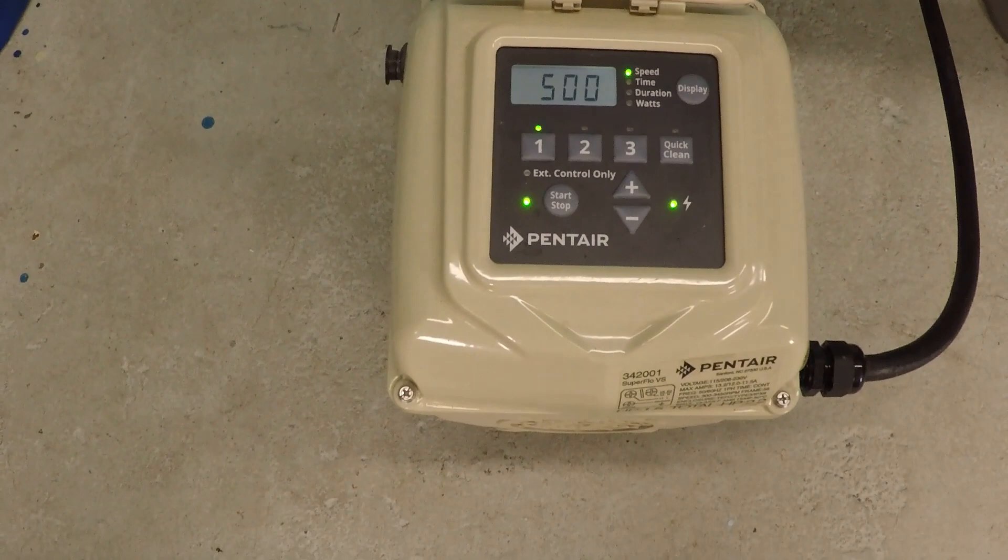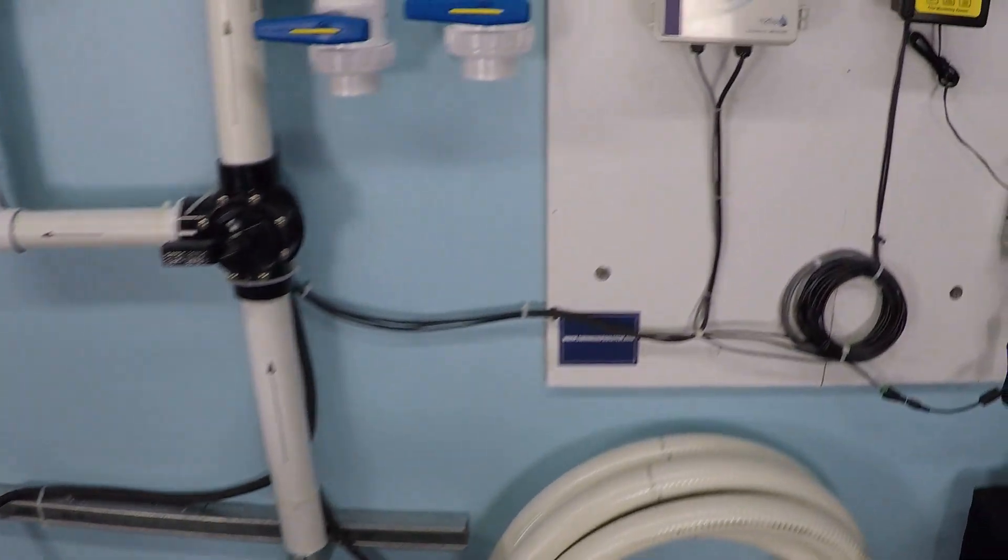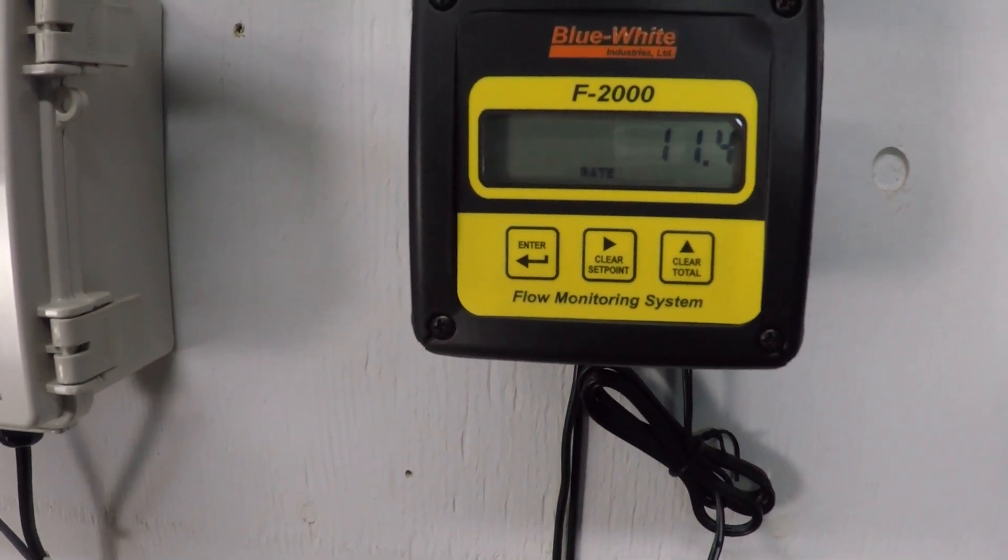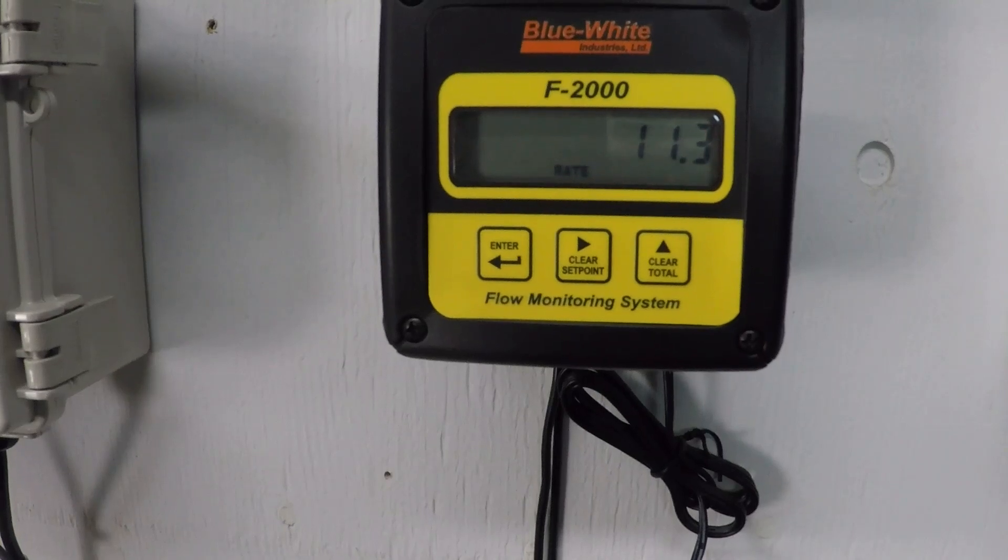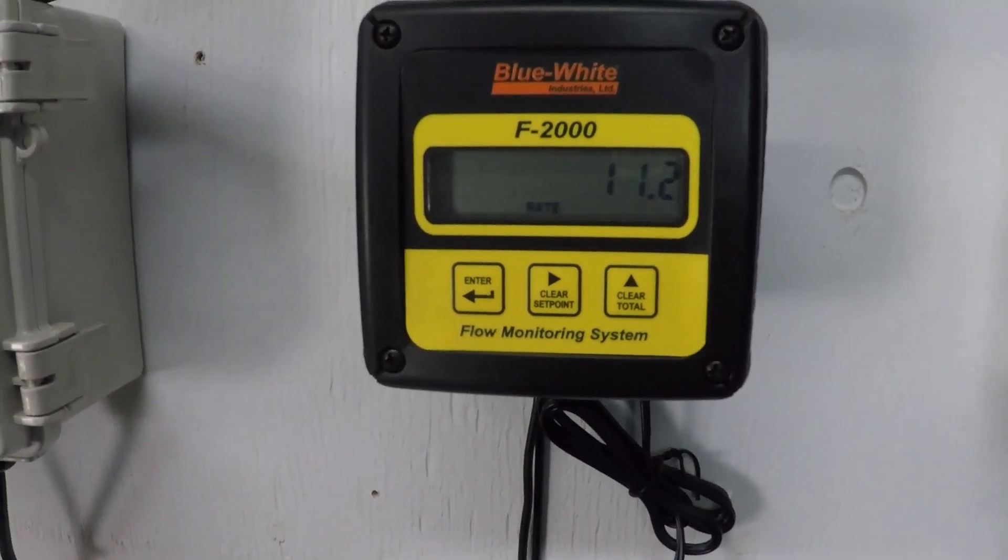So again, 500 RPM to start with here, which is so low. You can't even tell the thing's on. You'd have to put your hand on it to even know that it's on right now. But it's still moving over 11 gallons per minute, 11.2 gallons per minute. Very interesting.